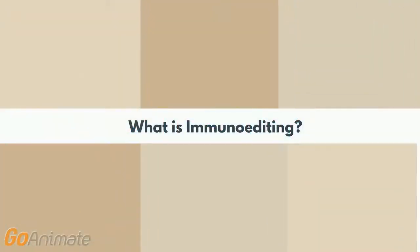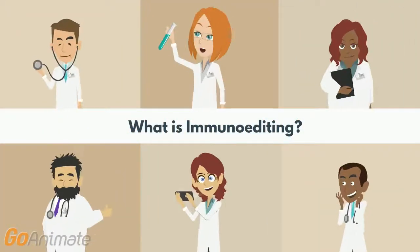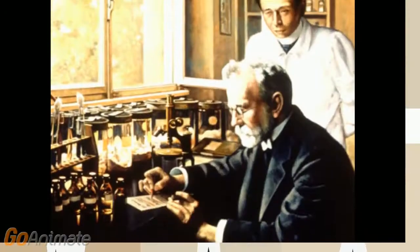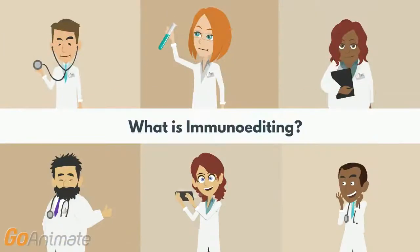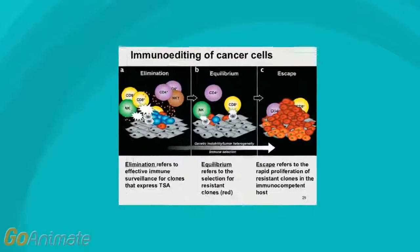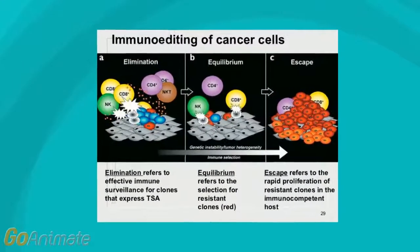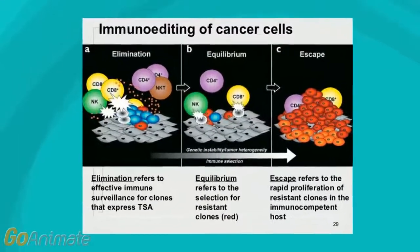Immune surveillance was a hypothesis first conceived by Paul Ehrlich in 1909, in which the immune system detects and eliminates neoplastic cells in the body. However, despite having a functioning immune system, neoplastic cells are able to avoid this immune surveillance and gain traction, leading to clinically observable tumours.